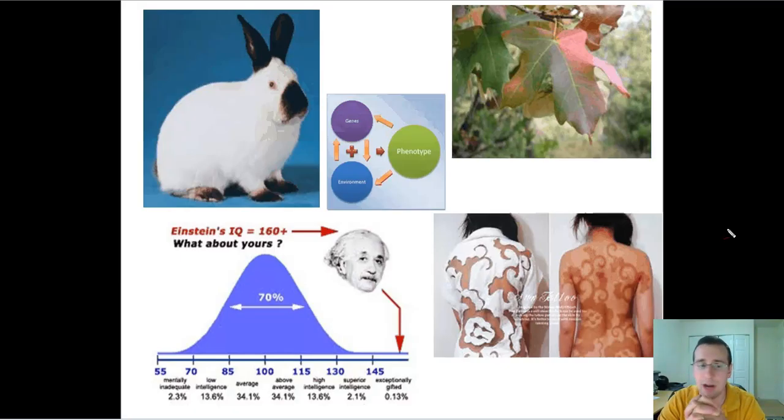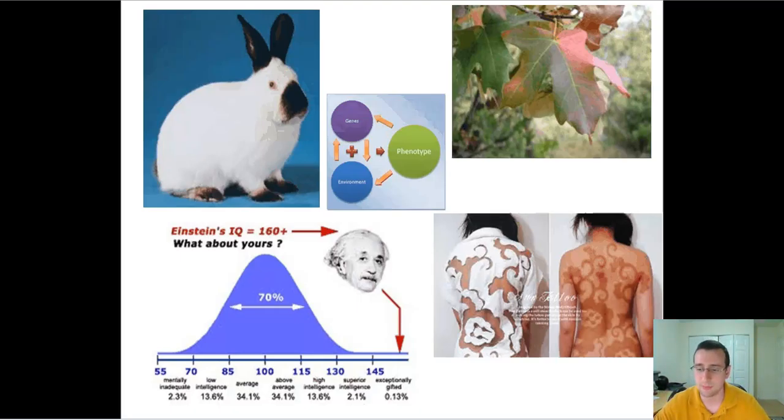So interactions between genes and the environment will lead to even more variety because that will determine which genes actually become expressed from the genetic code that you have. So just because you have genes doesn't mean you're going to be a certain way. The environment determines which genes are active or not, leading to even more variation.